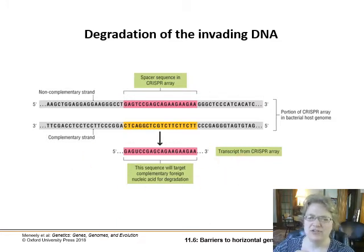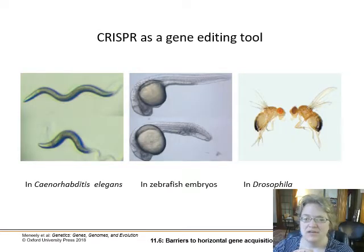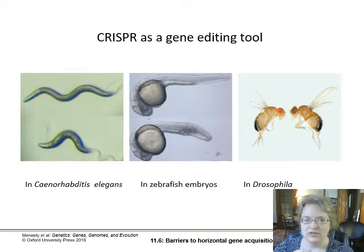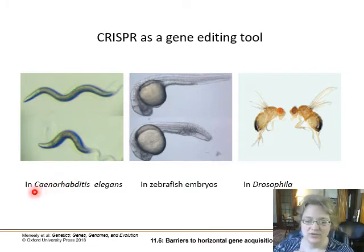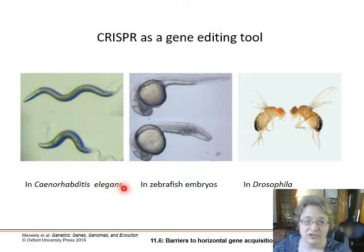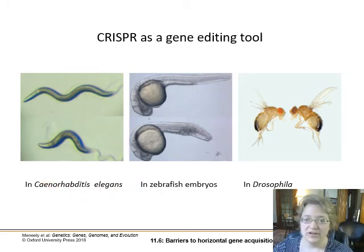CRISPR can be used as a gene editing tool to make a precise cut in a particular area of the genome, enabling targeted gene insertion. All the pop media says CRISPR is so easy — it's really not. The idea is simple, but carrying it out is difficult because you need to change it up not just for every species but for every particular strain of a species, since the insertion sequence has to be so precise. It is possible, and it's a very interesting tool, but not as simple as mainstream science media would have you believe.